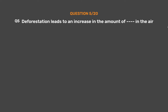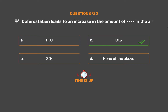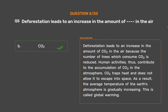Question number 5: Deforestation leads to an increase in the amount of dash in the air. Option A: H2O. Option B: CO2. Option C: SO2. Option D: None of the above. The correct answer is Option B: CO2. Deforestation leads to an increase in the amount of CO2 in the air because the number of trees which consume CO2 is reduced. Human activities thus contribute to the accumulation of CO2 in the atmosphere. CO2 traps heat and does not allow it to escape into space. As a result, the average temperature of the Earth's atmosphere is gradually increasing. This is called global warming.